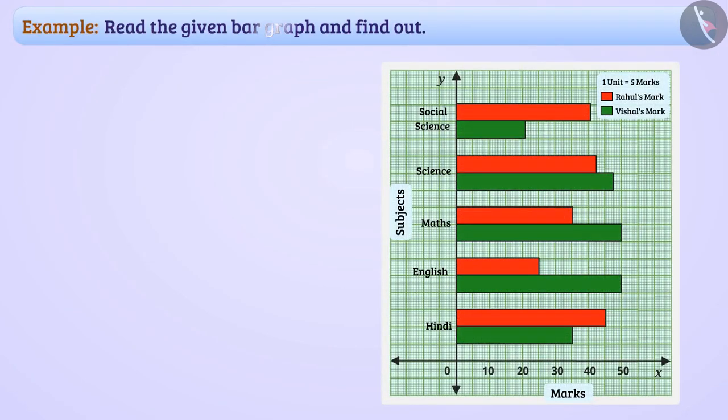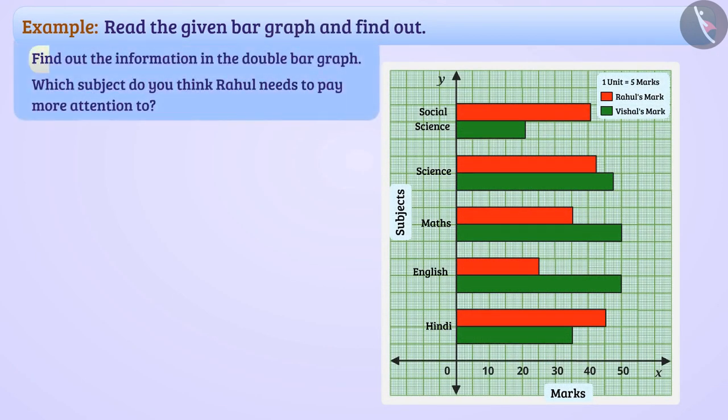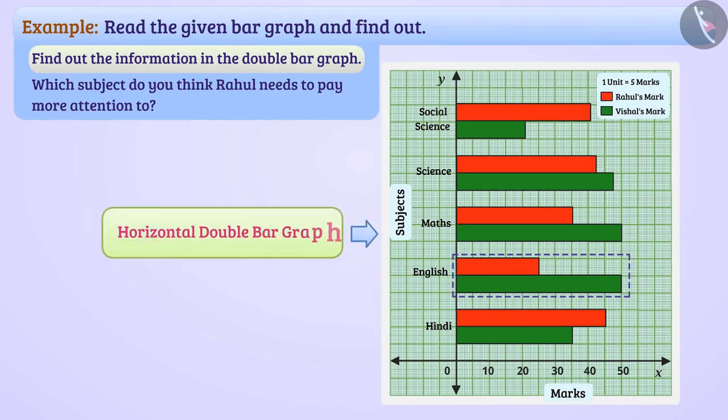Read the given bar graph and find out. Find out the information in the double bar graph. To find out what information is shown in this bar graph, one has to look at what is represented on x-axis and y-axis along with understanding what each bar represents in a pair of bars. The double bar graph shown is the horizontal double bar graph.